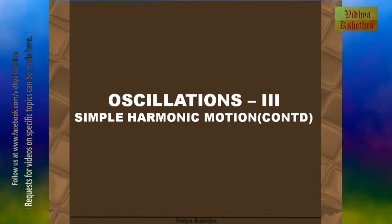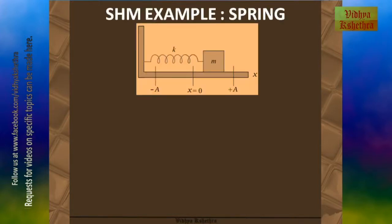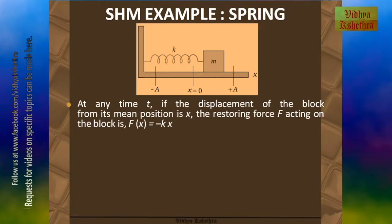First we shall see the case of the spring. In this figure we can see a spring of spring constant k which is attached to a mass m at one end and to the wall at the other end. The mean position or equilibrium position of the spring is at x equal to zero, and the spring oscillates between plus a and minus a, where a is the amplitude of oscillation. At any time t, if the displacement of the block from its mean position is x, then the restoring force f acting on the block is f(x) equal to minus kx. This is in accordance with Hooke's law.